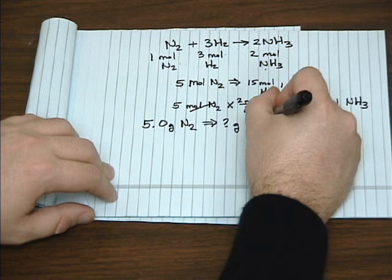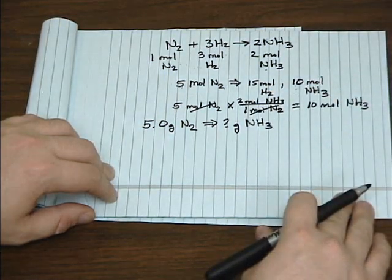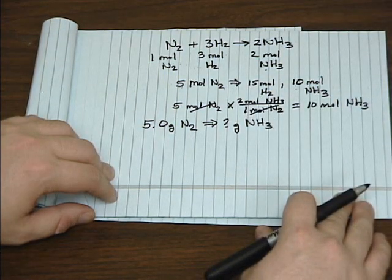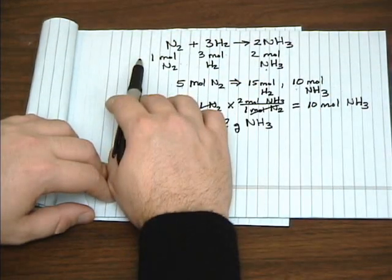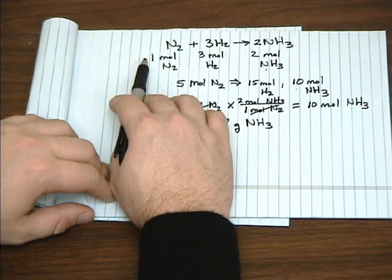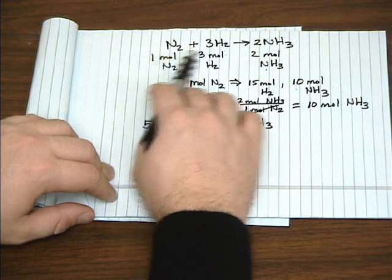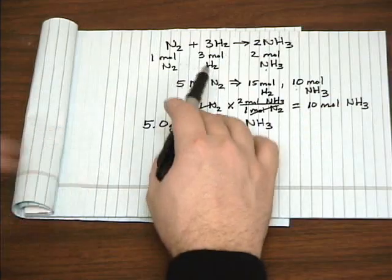Let's see how many grams of ammonia we can produce. Now, remember, this one to three to two ratio, that's numeric, for example, by mole.